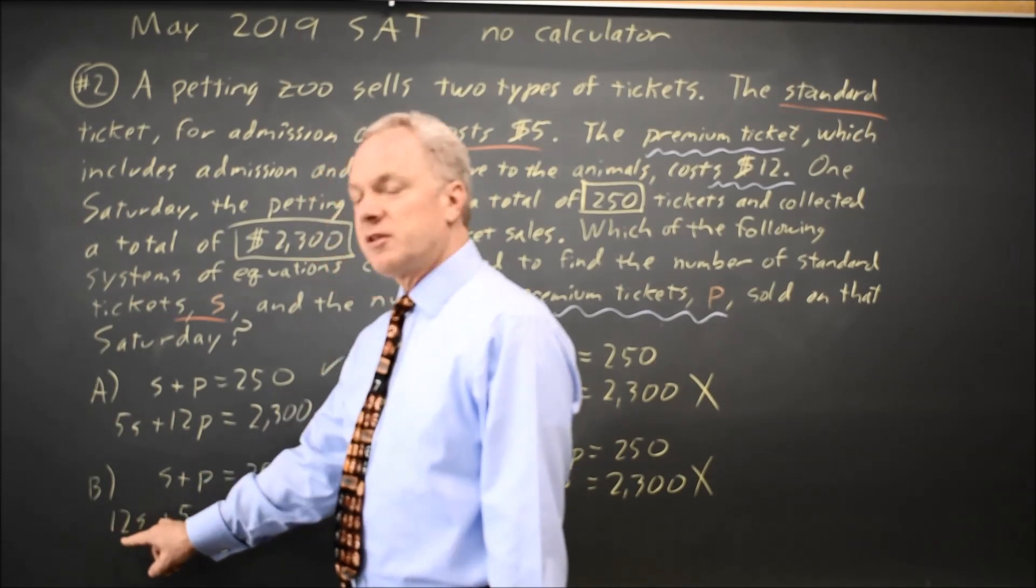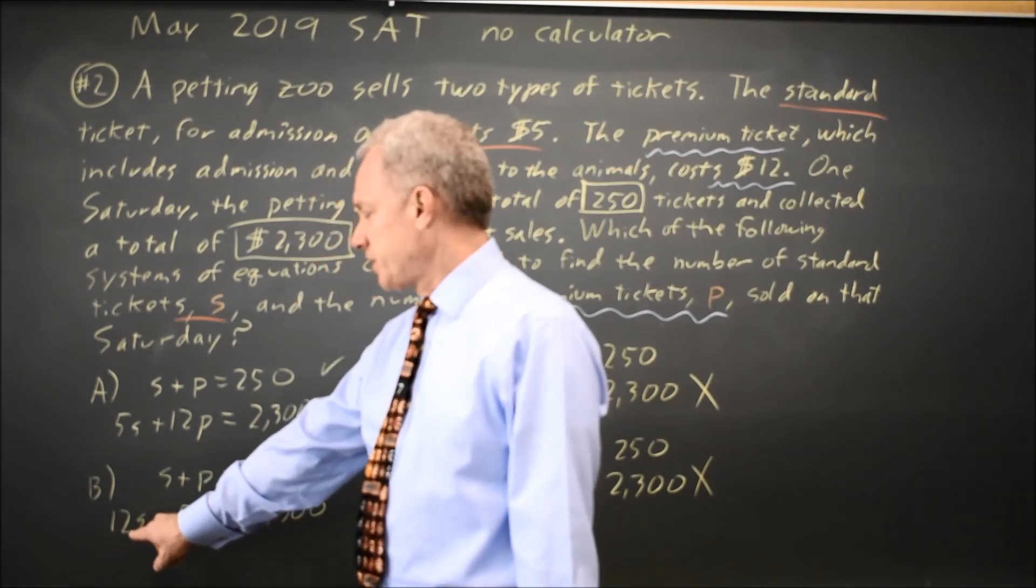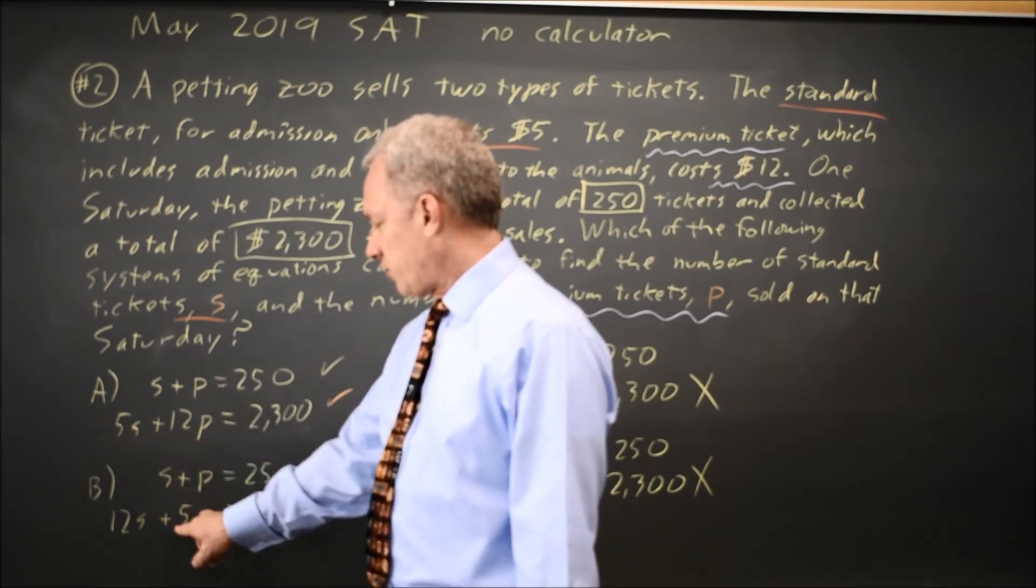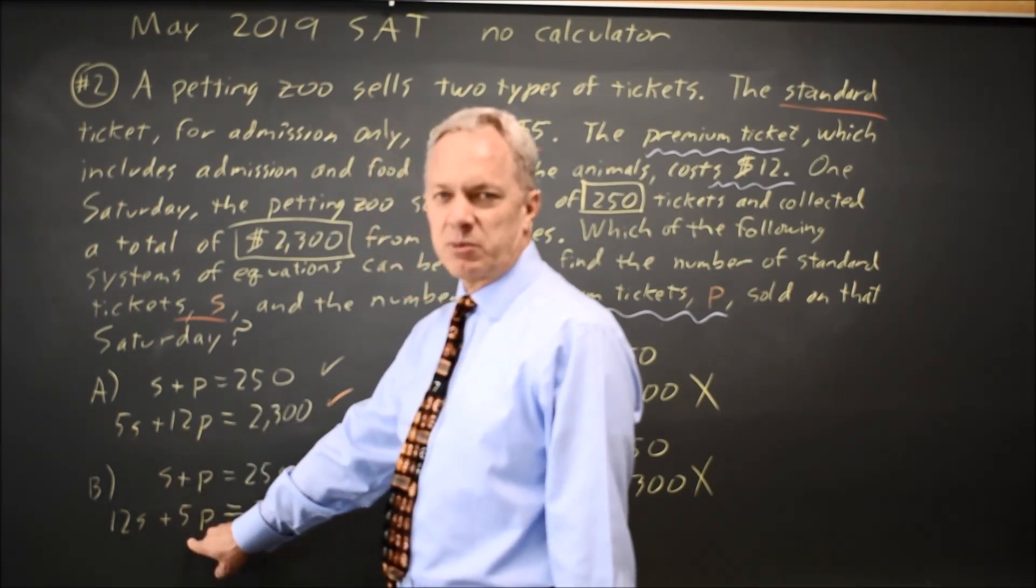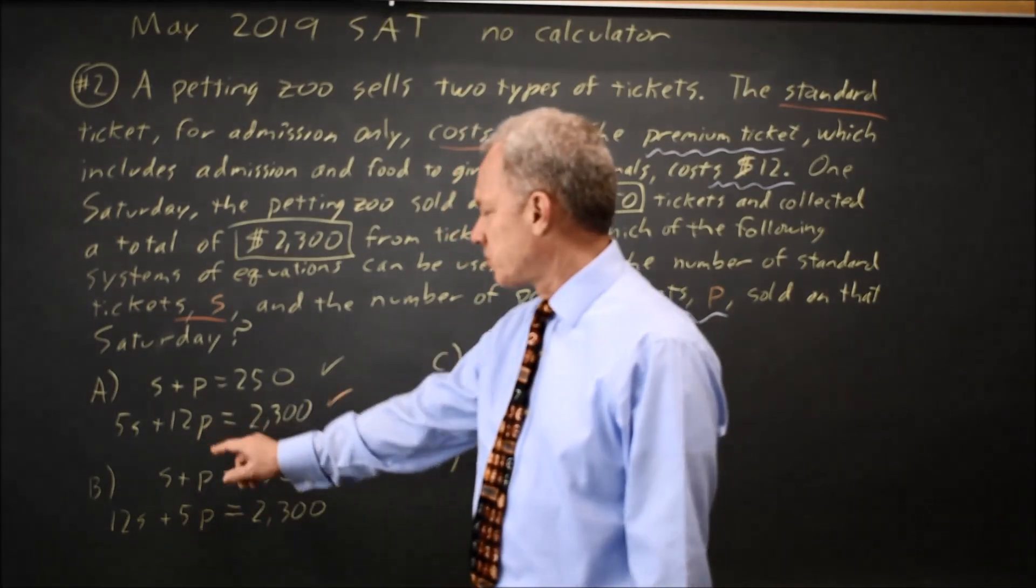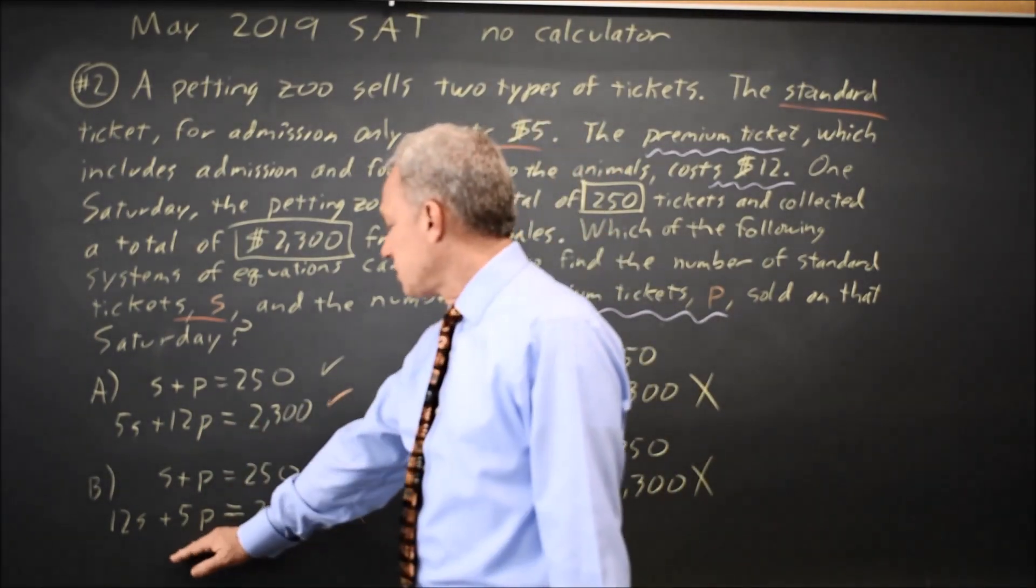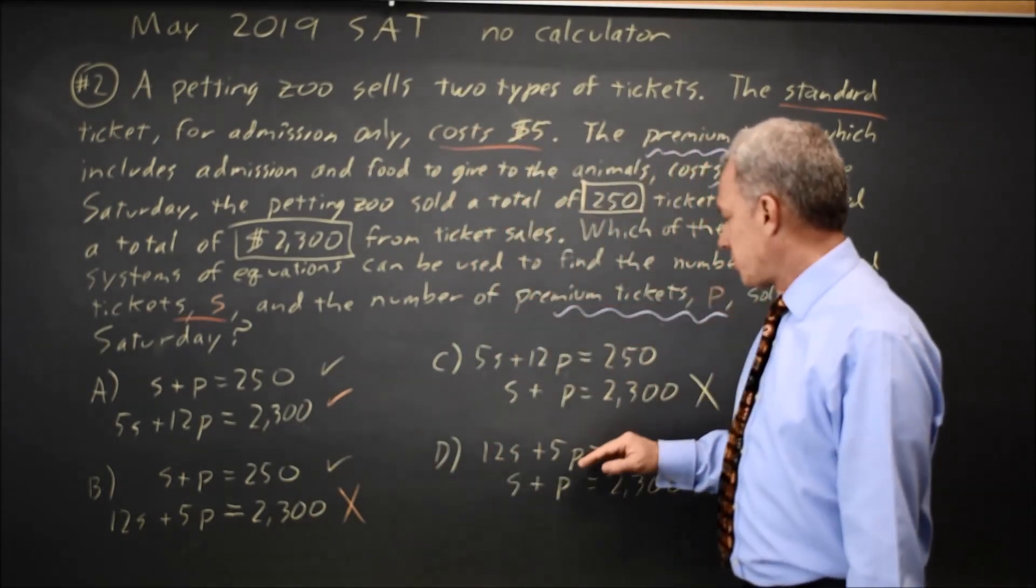In choice B, they swapped 12 times the number of standard, but your revenue is only 5 times the number of standard, and they have only 5 times the number of premium, where the correct revenue would be 12 times the number of premium. So choice A works for both equations. B is wrong on the second equation. C and D are wrong on the first equation.